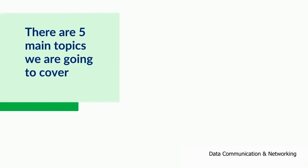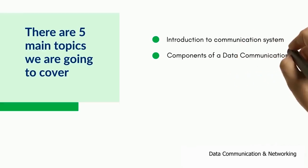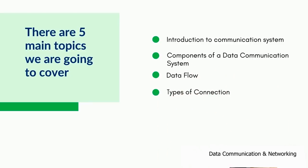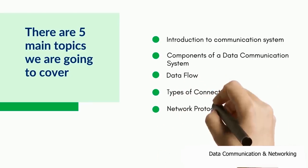In this lecture, we will cover five main topics to understand the data communication system. We start with the basics of communication system, the various components of a data communication system, followed by data flow—the concept of simplex, half duplex, full duplex communication—and the types of connection and network protocols.